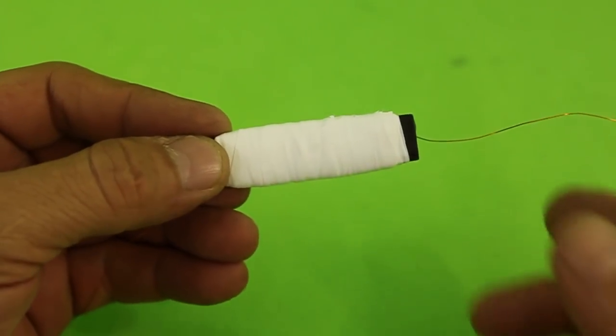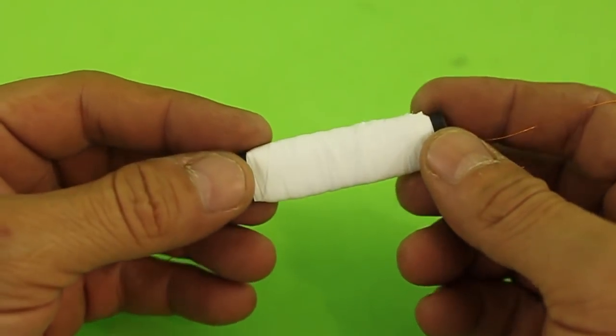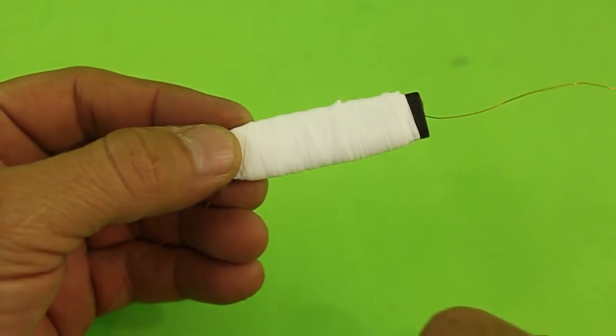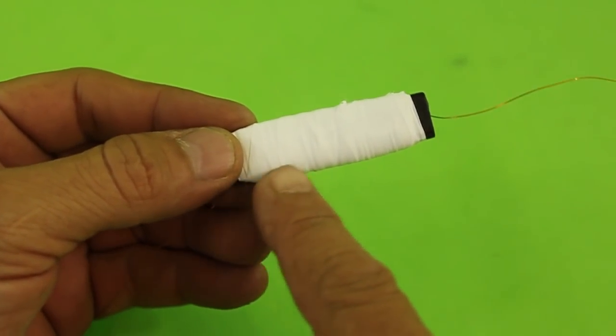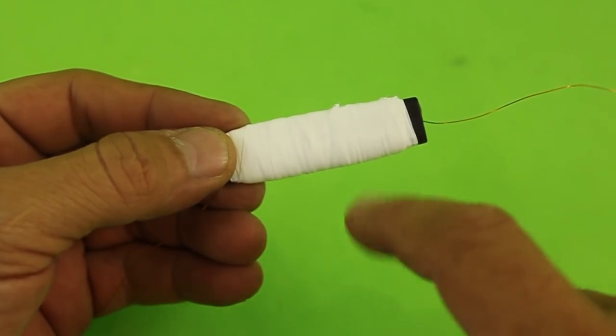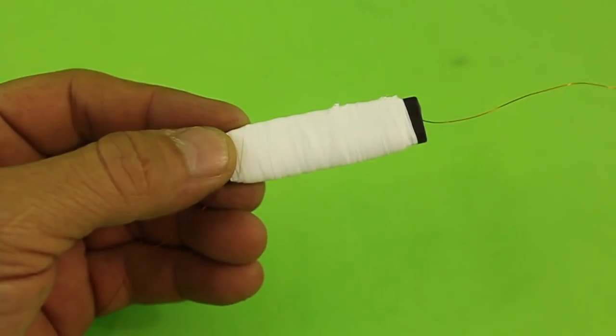We have the 500 turns of the secondary and now we need to wind another two coils: one of 48 turns for the primary and another of 10 turns for the feedback coils.